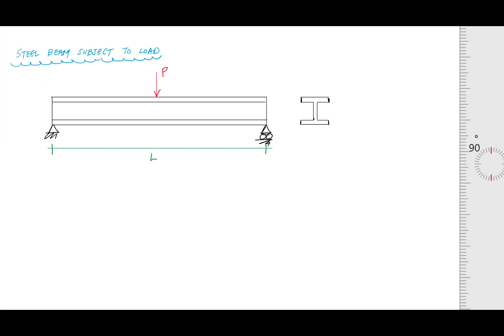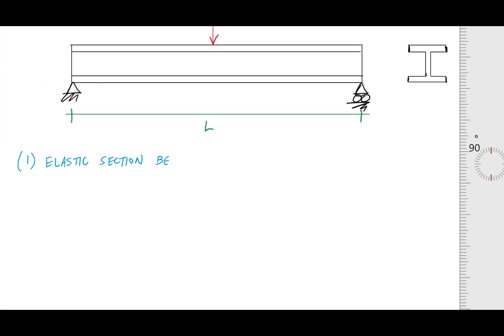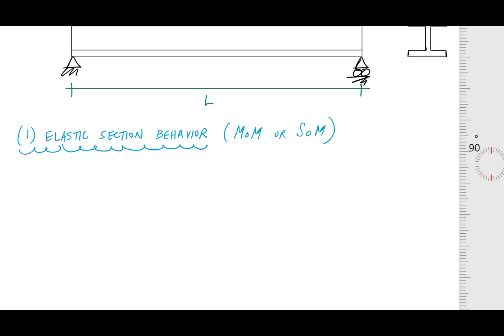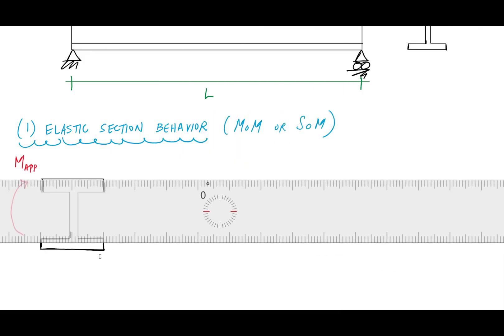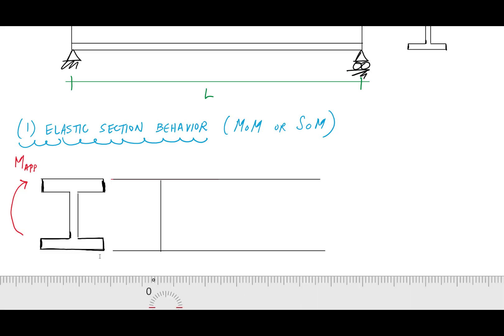The first stage of behavior we're going to look at is elastic section behavior. This is everything you would have learned in mechanics of materials or strength of materials, where the cross section remained in the linear elastic region of the stress-strain curve. We have this I-shaped cross section, and there's a moment applied to it. We would get that from a moment diagram with this loading at mid-span — it might be an equation like PL over 4. What it does is cause bending where the top is in compression and the bottom is in tension.